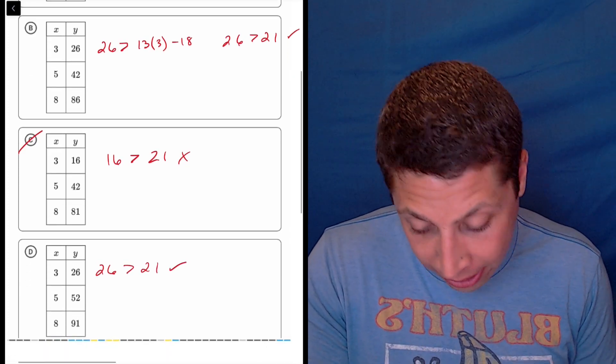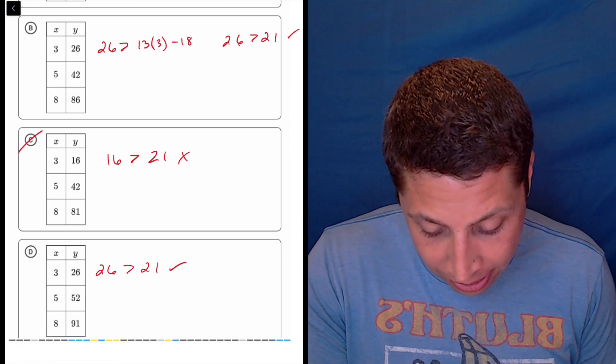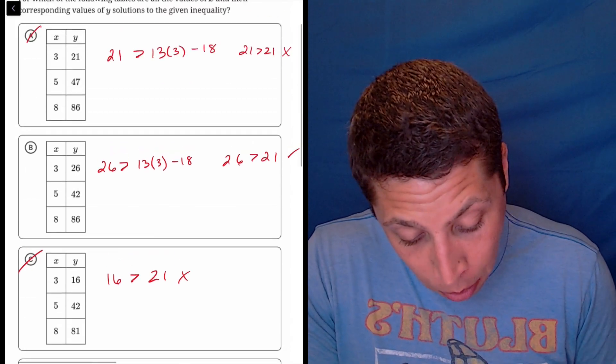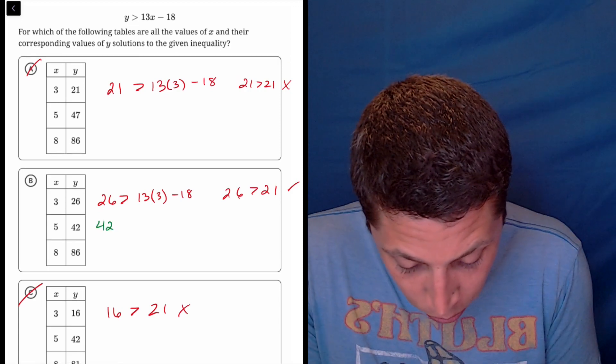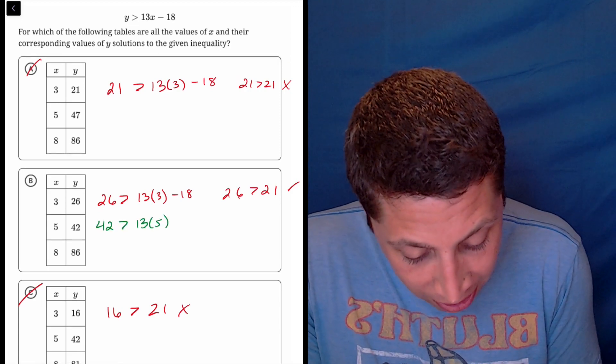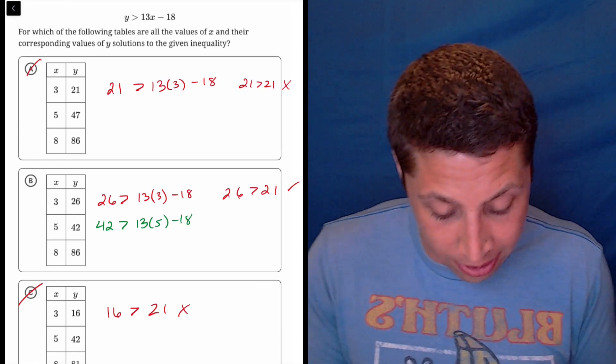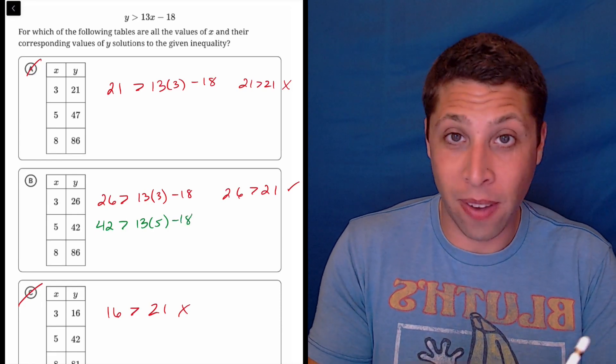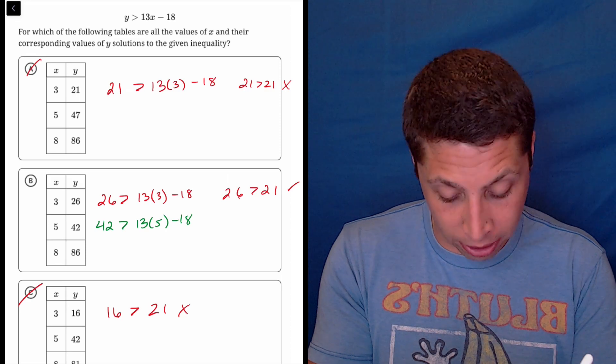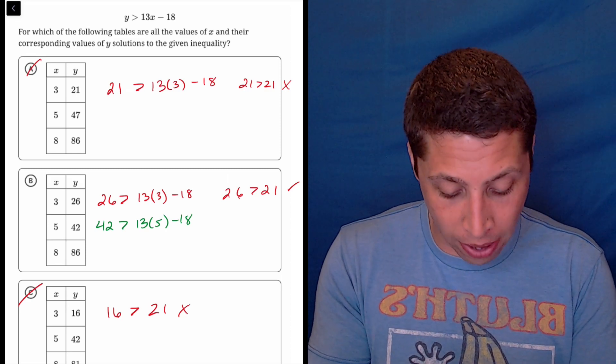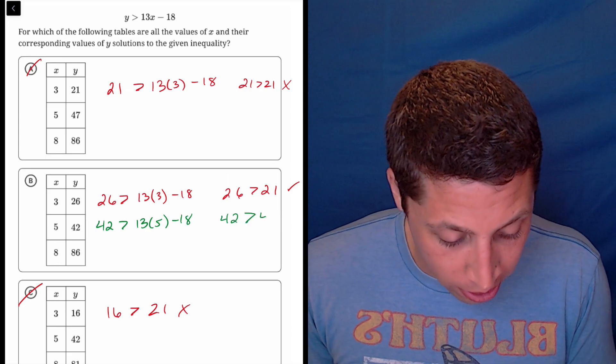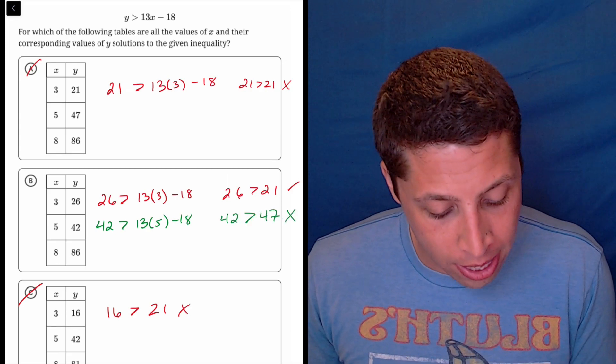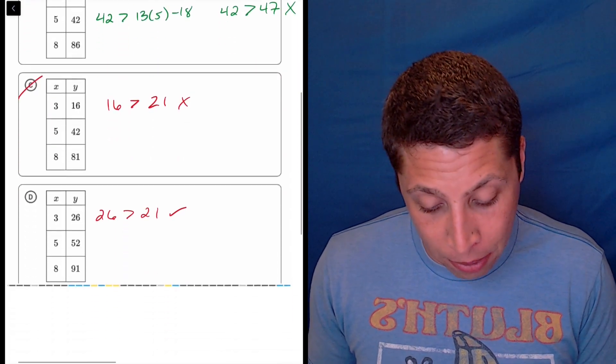So really at this point I'm just looking at the other parts of B and D and seeing where I want to go. I guess I can just go to the 5 part. So let's do that. That would be 42 is greater than 13 times 5 minus 18. So 13 times 5 is 65 minus 18 is 47. So this is saying 42 is greater than 47. That's not true. So B can't be right.